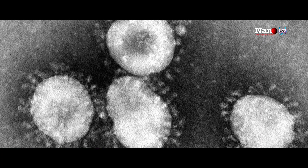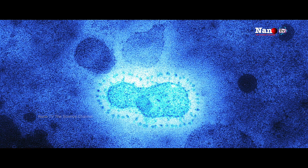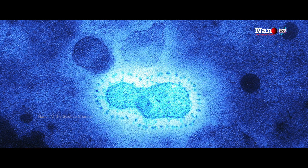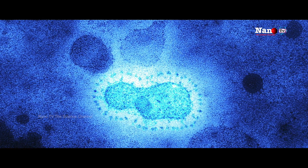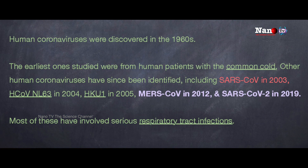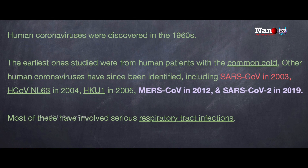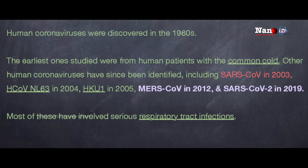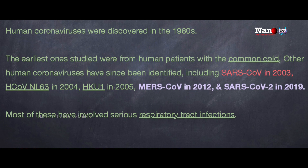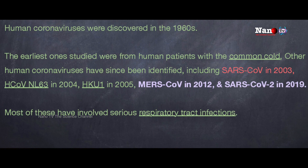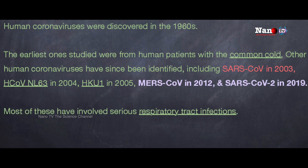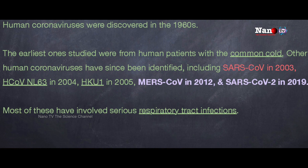The coronavirus was first discovered in the 1930s when it was found in domesticated chickens. Then around 30 years after that, human coronaviruses were discovered in the 1960s in the form of the common cold. Human coronaviruses were then identified as SARS-CoV in 2003, again originating from China, followed by MERS-CoV in 2012, and now SARS-CoV-2 in 2019. Most of them cause respiratory tract infections.